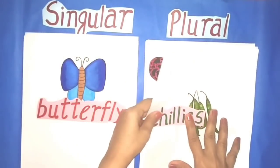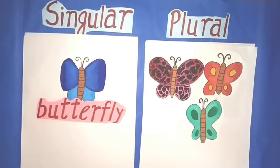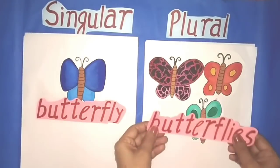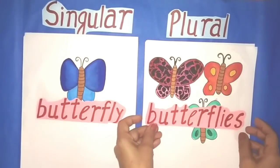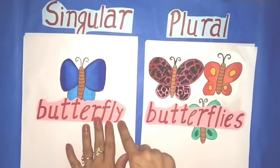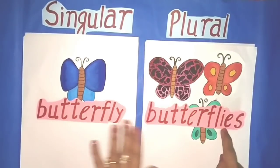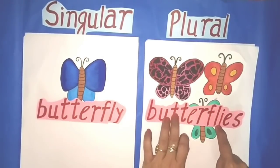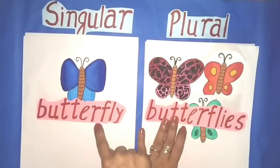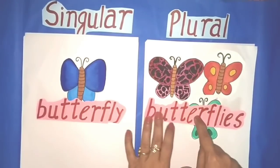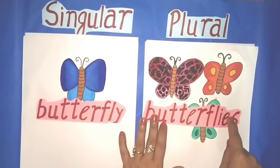The next word is butterfly. For more than one butterfly we will write butterflies. In place of Y we will write IES. Butterfly, butterflies.